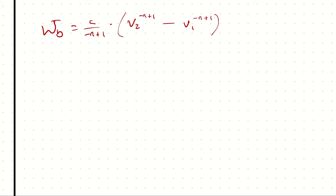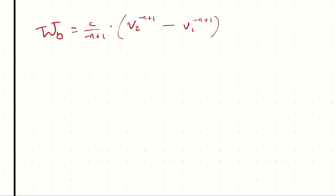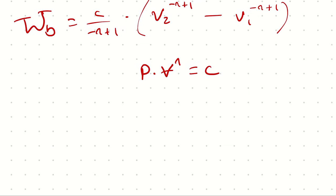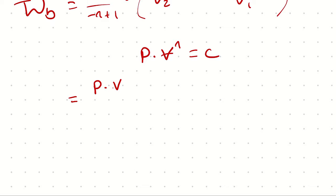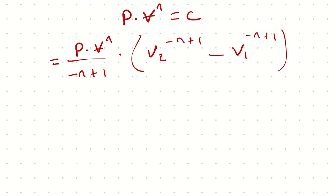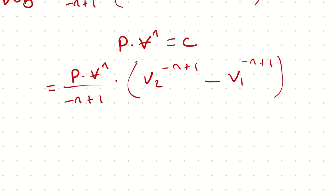So the boundary work of a polytropic process is constant over (negative N plus 1) times the quantity V2 to the (negative N plus 1) minus V1 to the (negative N plus 1). The word 'constant' is unhelpful here, so let's replace it: since pressure times volume to the N is constant, we substitute that in, giving pressure times volume to the N divided by (negative N plus 1), times the same quantity. Which pressure and volume do we use? It doesn't matter, so long as they're evaluated at the same state point — P1V1 or P2V2, but not P1V2 or P2V1.